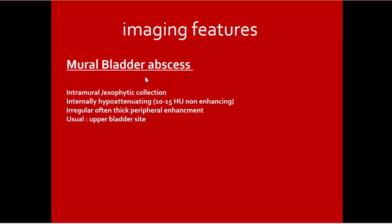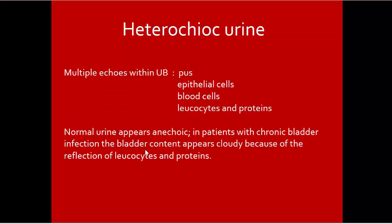Mural bladder abscess presents as an intramural exophytic collection, internally hypo-attenuating 10 to 15 Hounsfield units, non-enhancing, with irregular thick peripheral enhancement. Typically at the upper bladder site. By Doppler study, no internal vasculature is seen within the abscess.